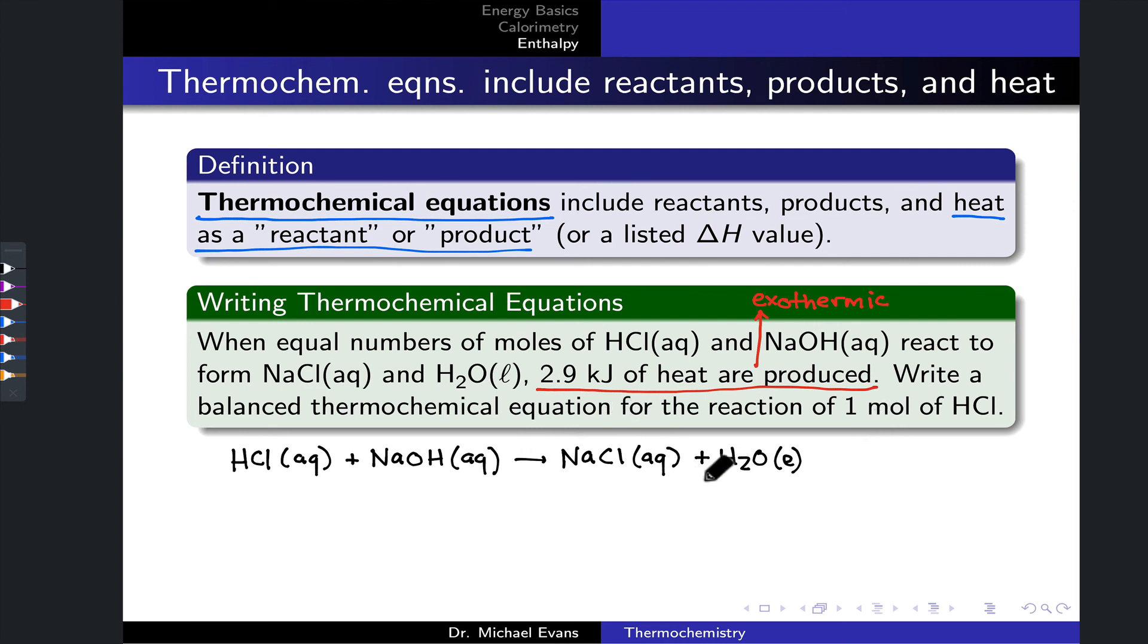or as it's stated here, heat is produced. Because heat is produced in the thermochemical equation, the heat appears on the products side, plus 2.9 kilojoules over here. For an endothermic process,